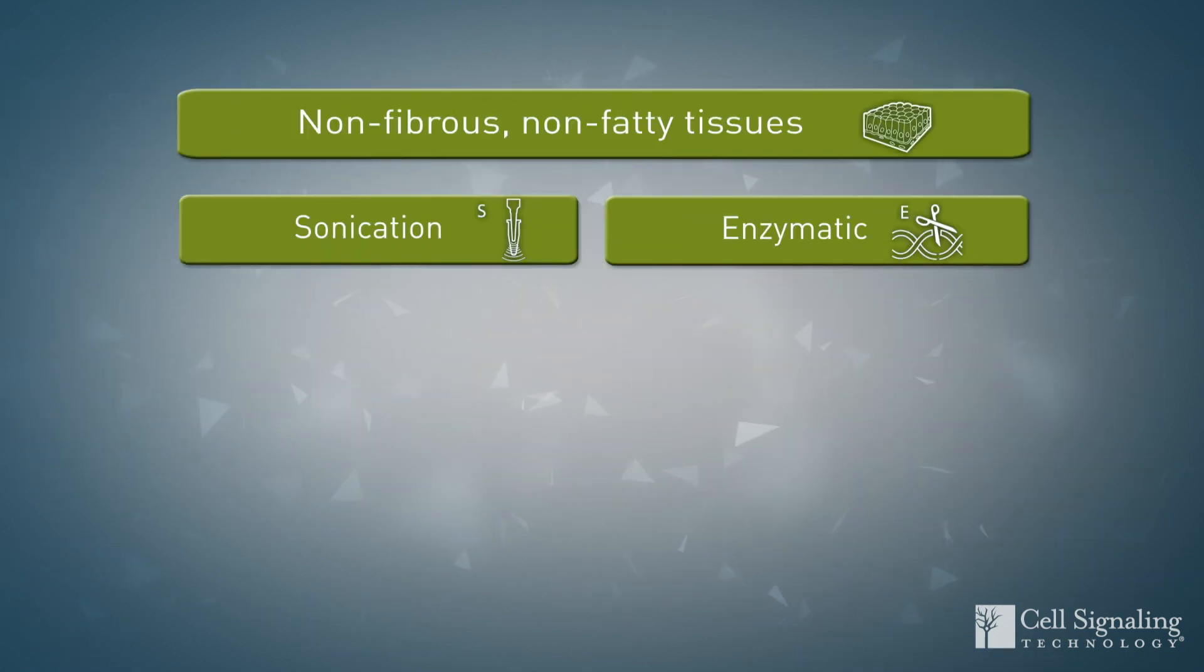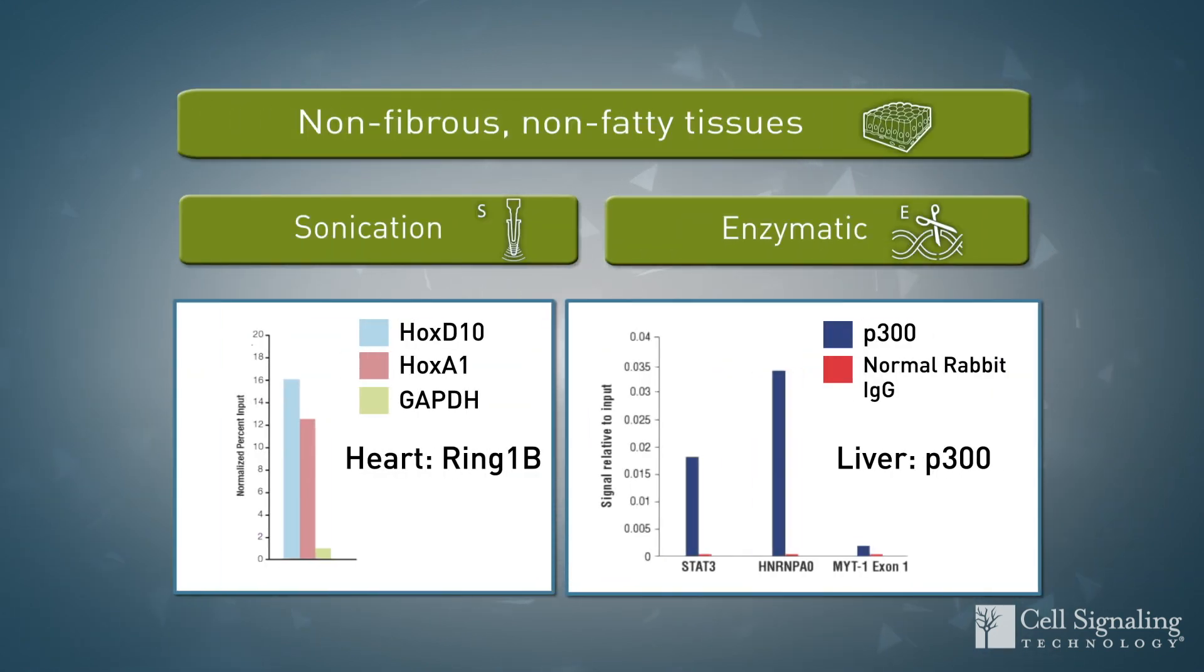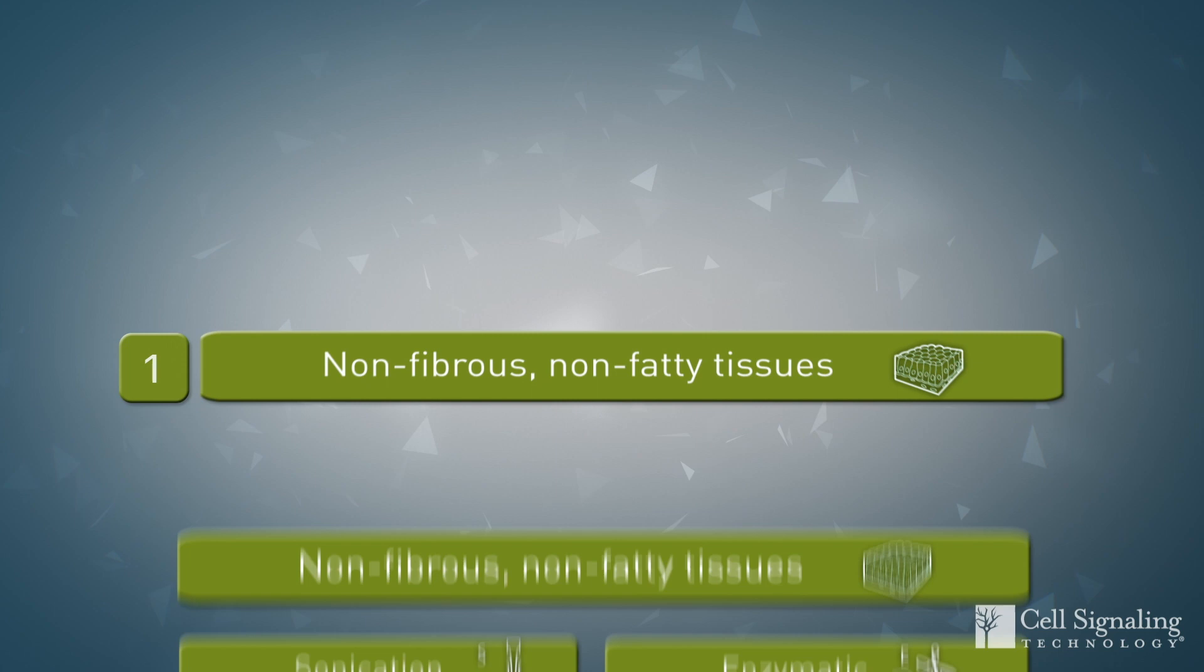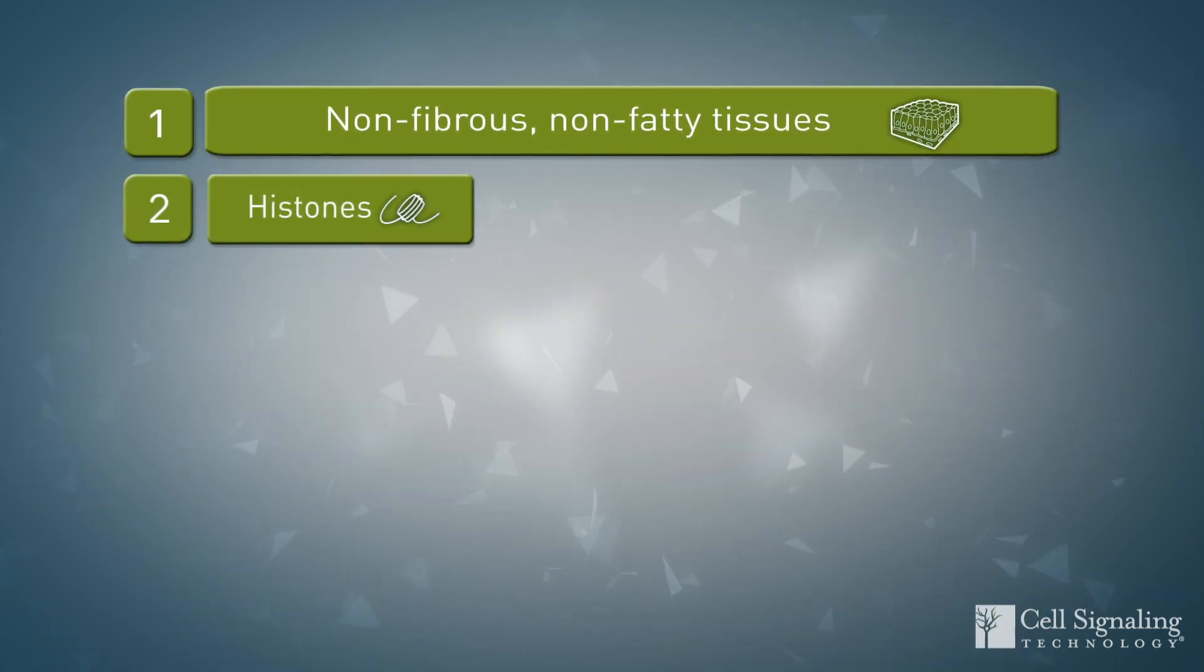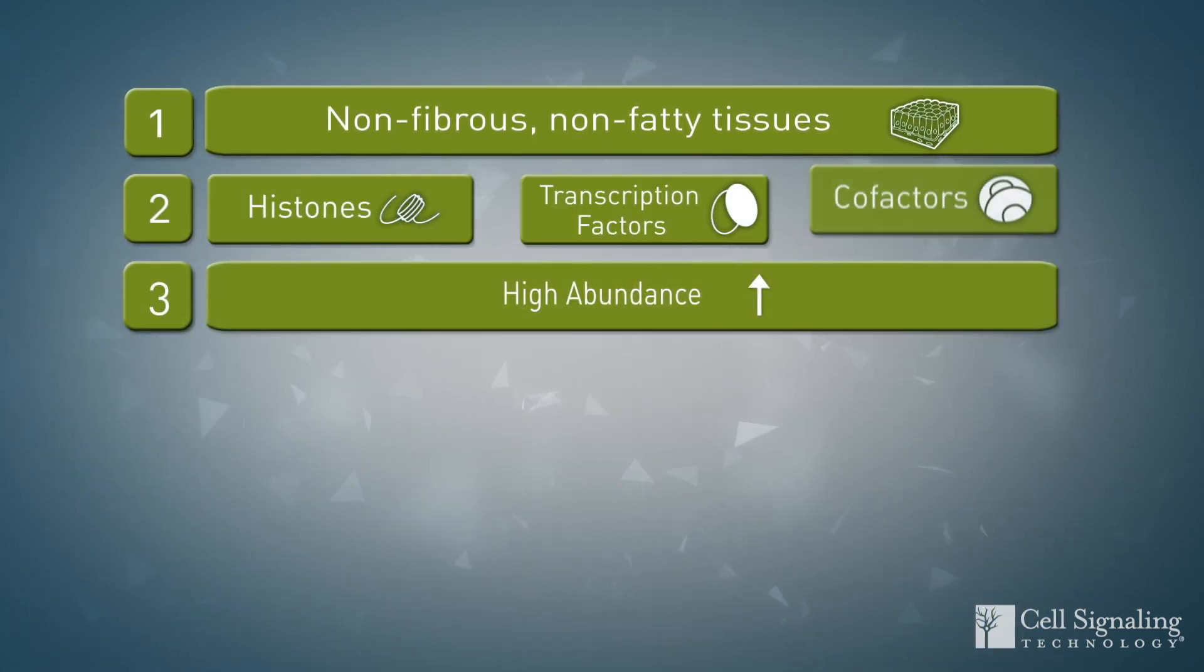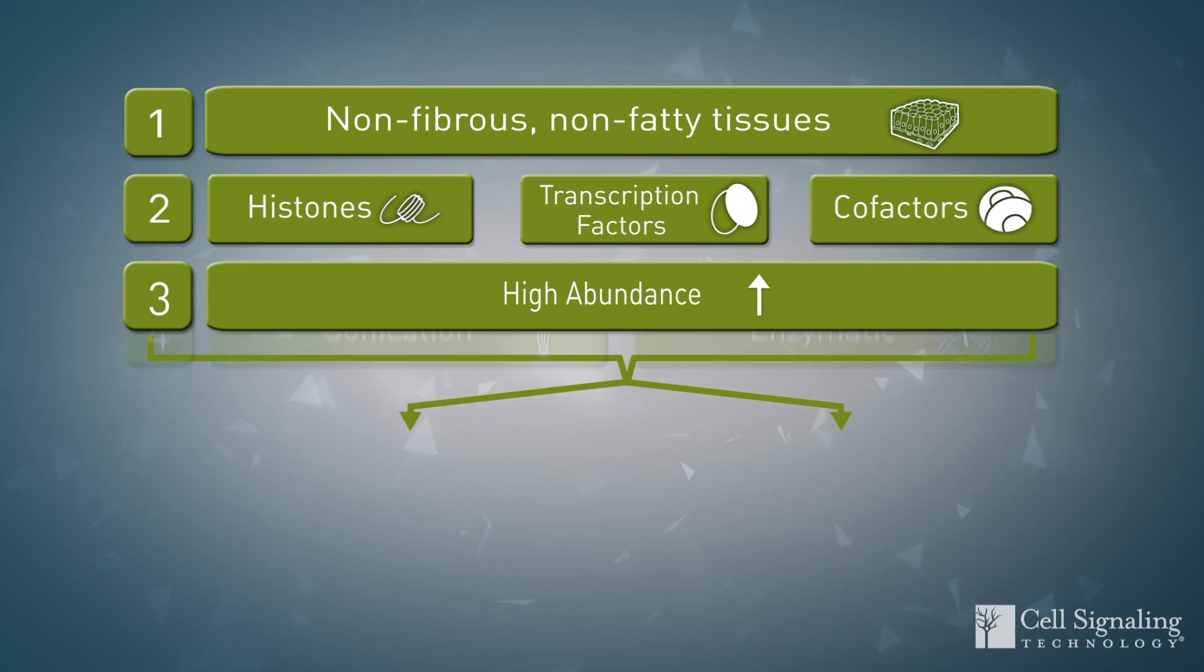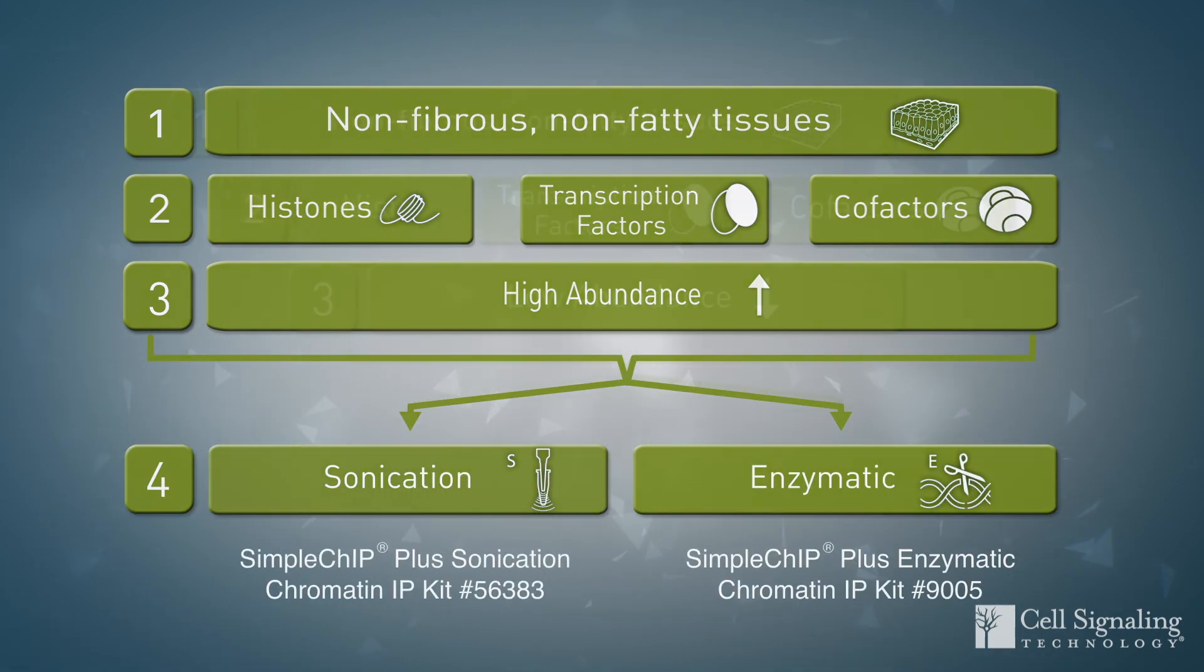SimpleChIP Plus kits for both sonication and enzymatic protocols are approved for use with most tissue types, including liver, brain, and heart. If you are looking at histones, high abundance transcription factors, or high abundance cofactors in these tissues, you can select either of these kits.